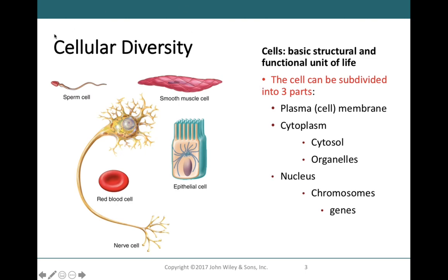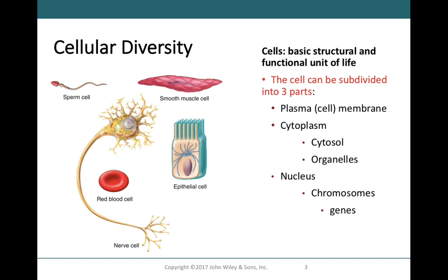The human body has a lot of cellular diversity — many different types of cells. Just a few examples include the sperm cell, smooth muscle cell, epithelial cell, red blood cell, and nerve cell. These show how different cells look and how different their functions are. Sperm cells are used for reproduction, nerve cells for communication, and red blood cells for transport — each with a unique purpose in the body.